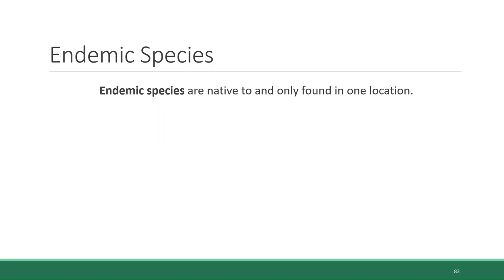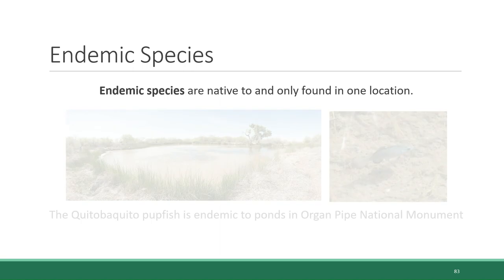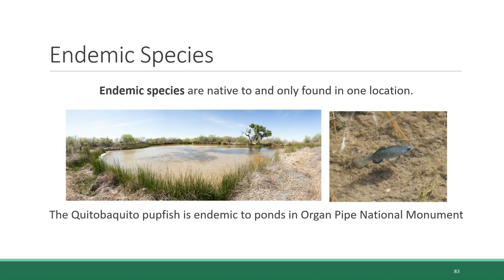One other feature of biodiversity in the tropics is that they have high numbers of endemic species. Endemic species are species that are native to and only found in one location. For example, blue jays are endemic to North America — you'll find them pretty much anywhere east of the Rocky Mountains, which is a huge habitat range, but not on other continents. On the other hand, the Quitobaquito desert pupfish is endemic to just a few springs and ponds in Organ Pipe National Monument in southern Arizona, totaling an area of about four square miles. The Quitobaquito pupfish is considered endangered because it has such a restricted habitat and is highly vulnerable to extinction.